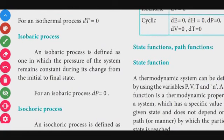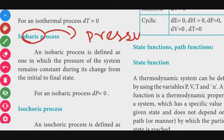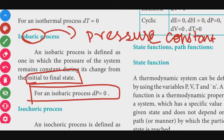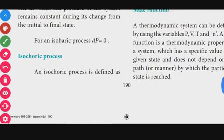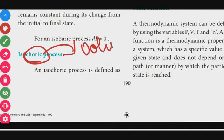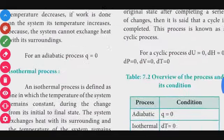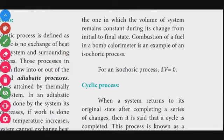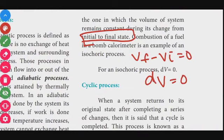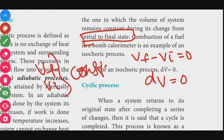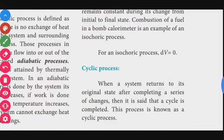Isobaric process: 'baric' refers to pressure, so in an isobaric process, pressure remains constant throughout from initial to final state — delta P = 0. Isochoric process: 'choric' refers to volume, so volume is constant throughout — delta V = 0. The combustion of a fuel in a bomb calorimeter is an isochoric process because the volume remains constant.